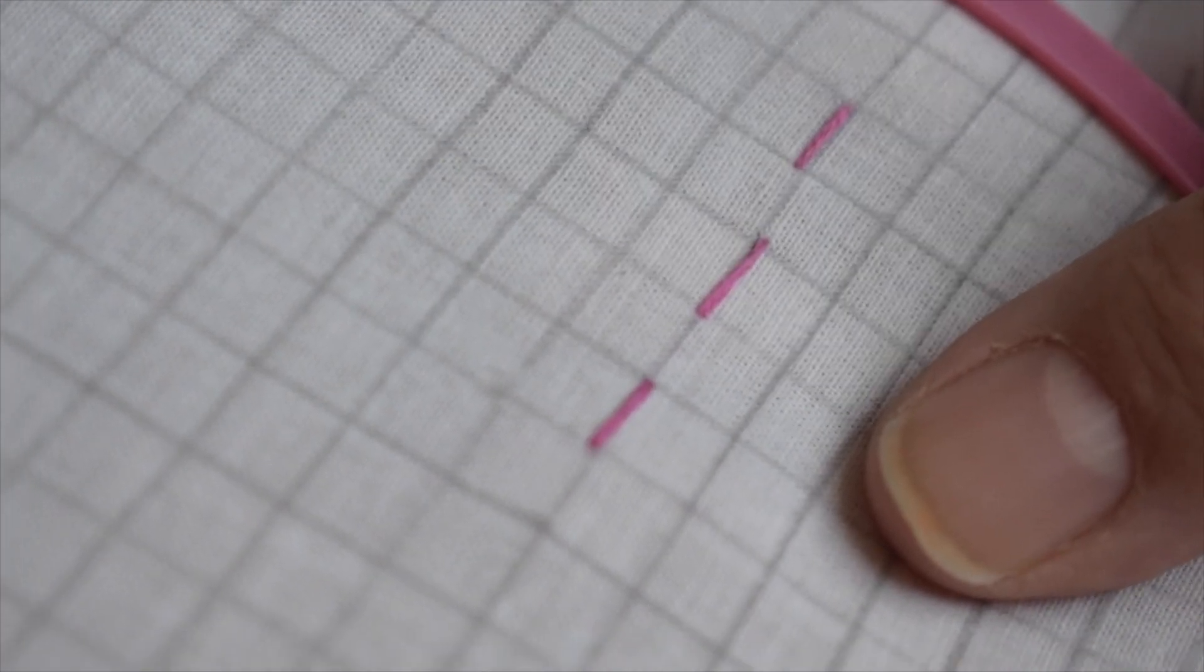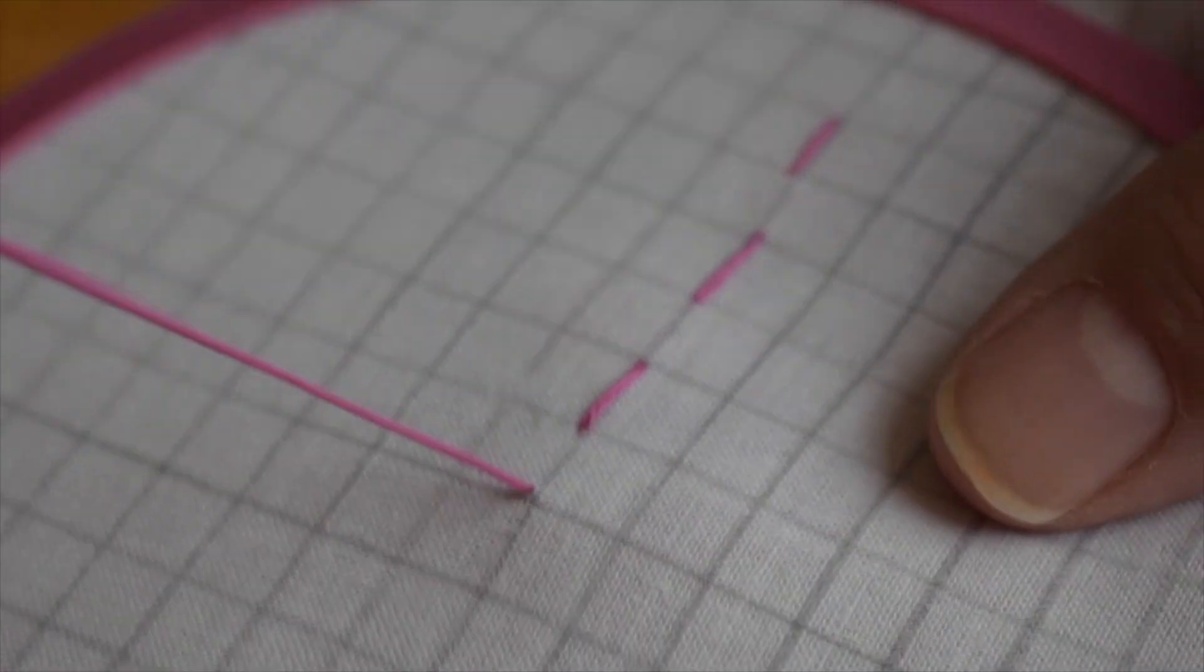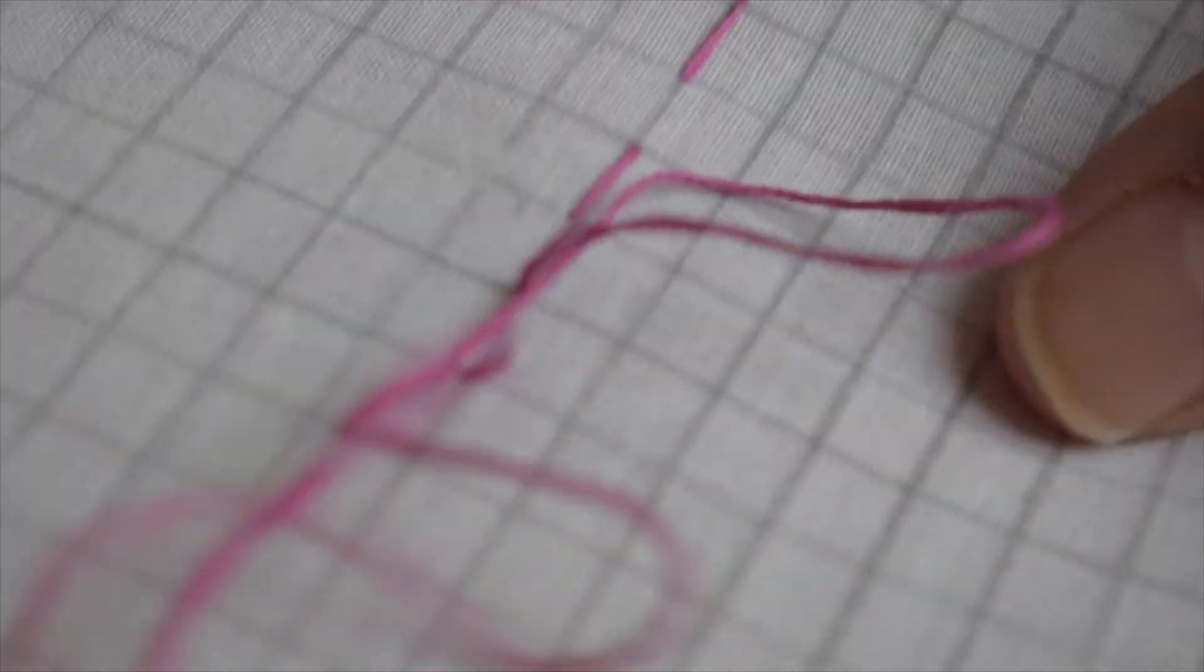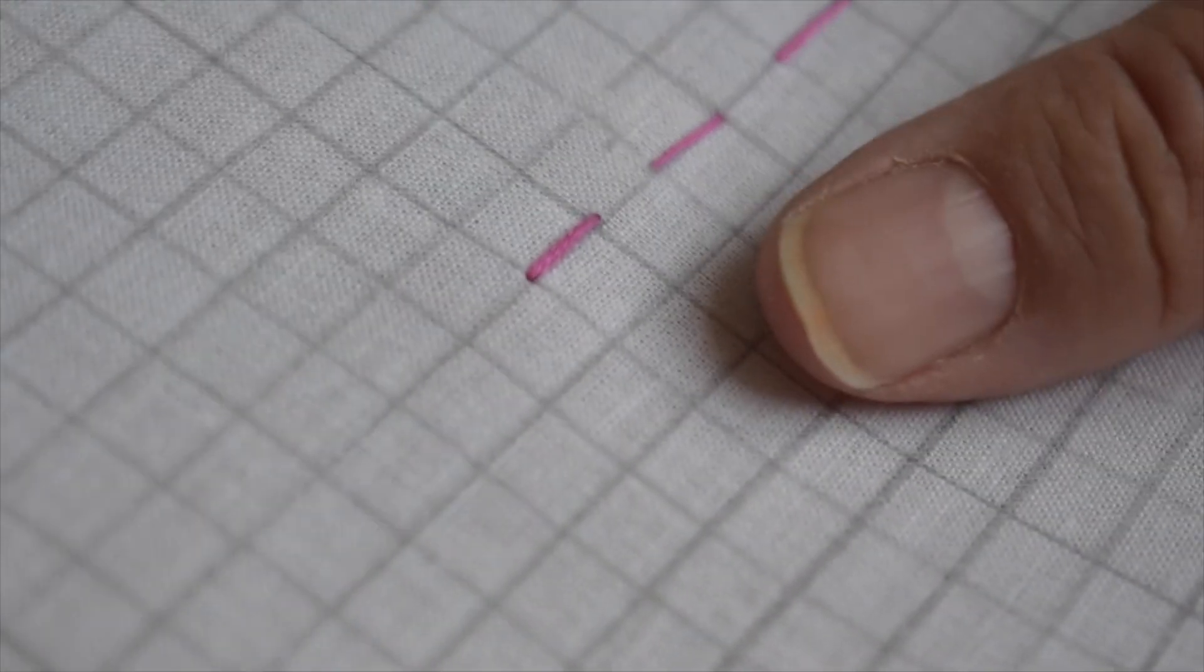So you can see I'm coming up in one corner of the square and then going down in the next, and then coming up and going down and coming up. So you just make a running line with fairly equal size stitches. Uniform stitches is considered to be a good thing.